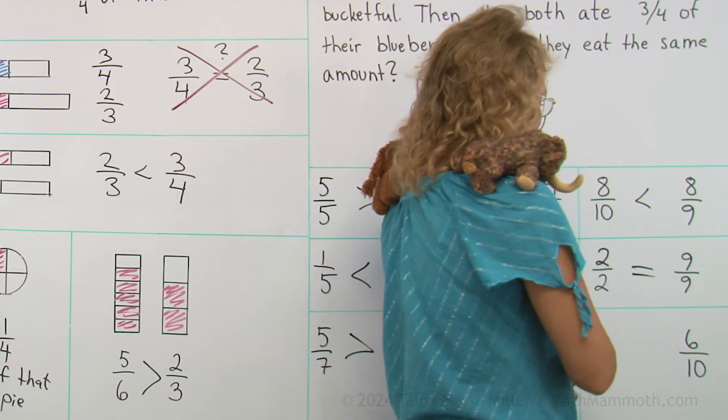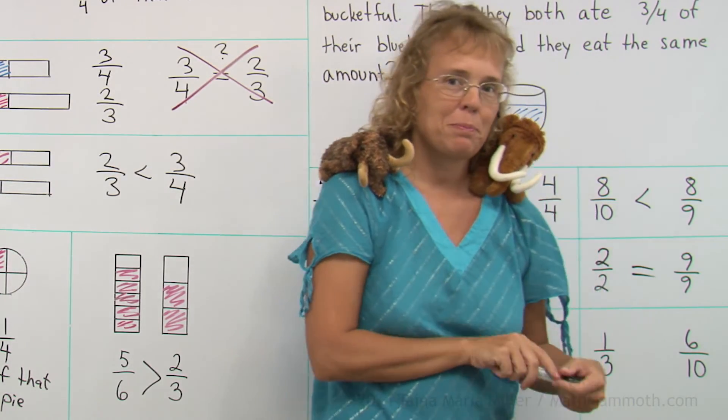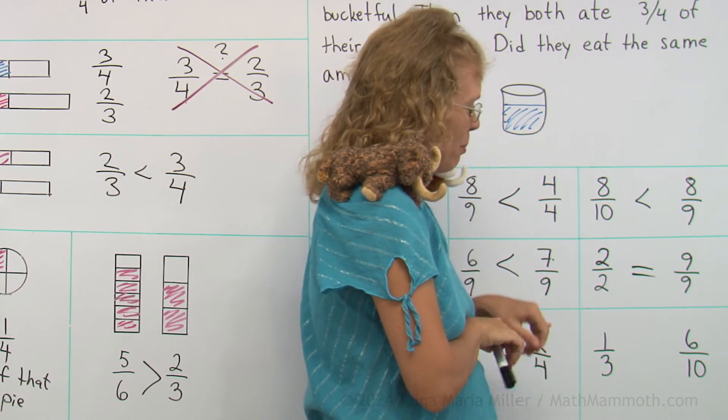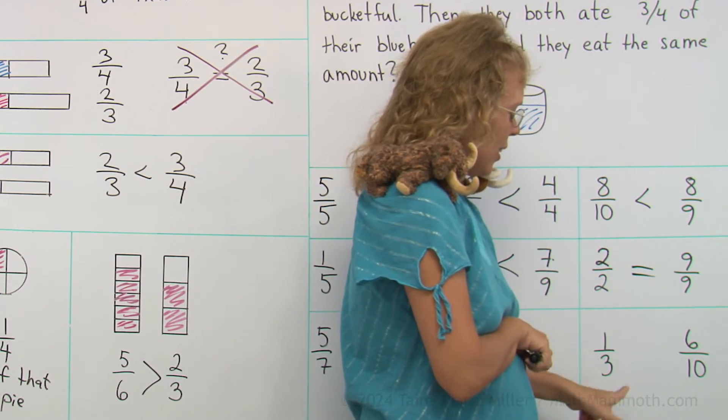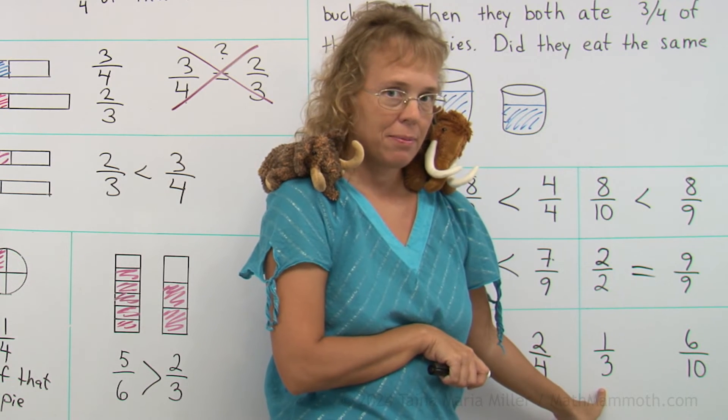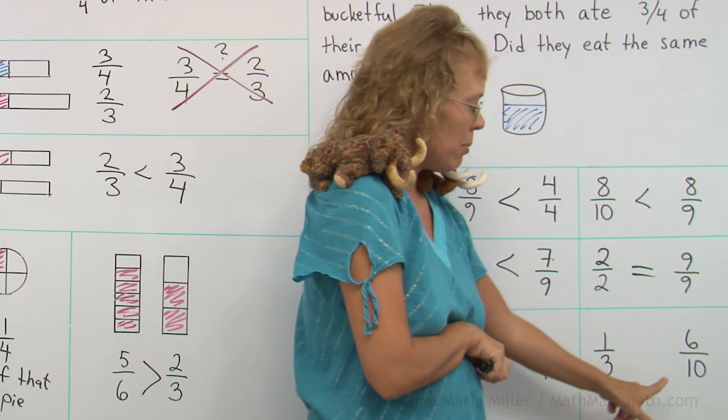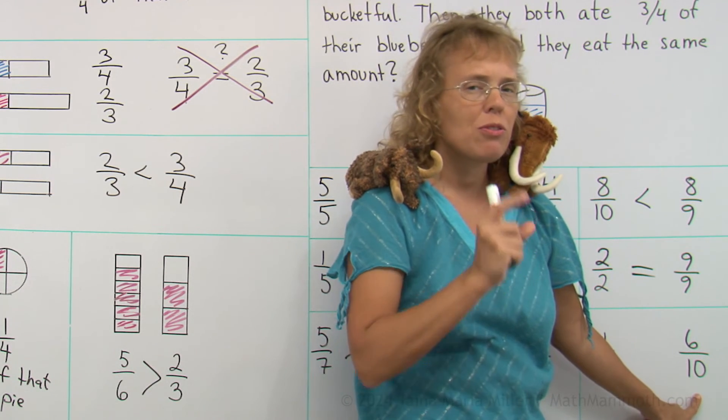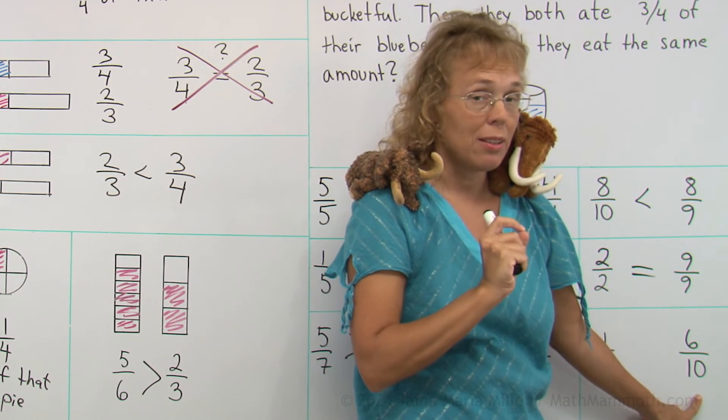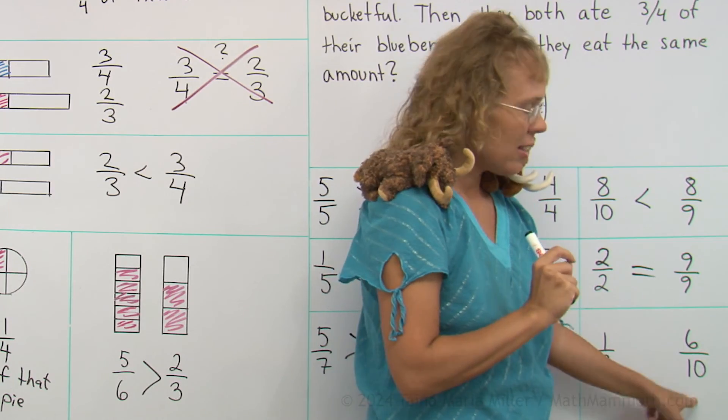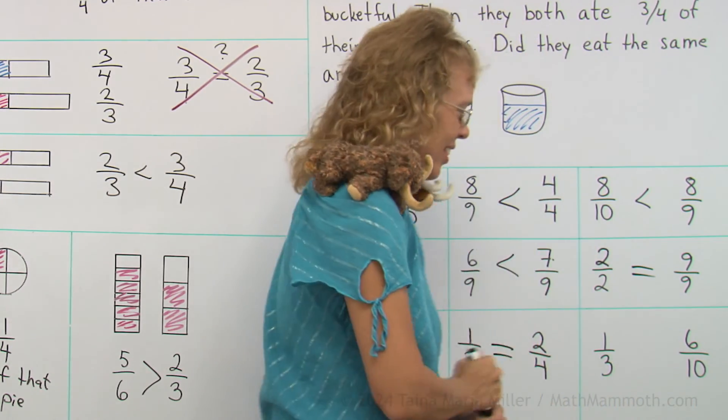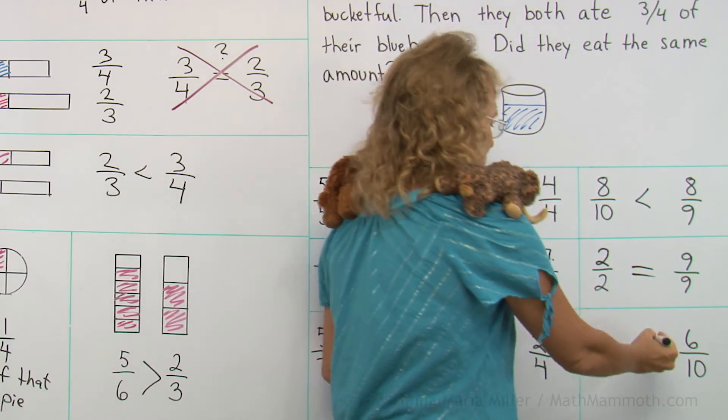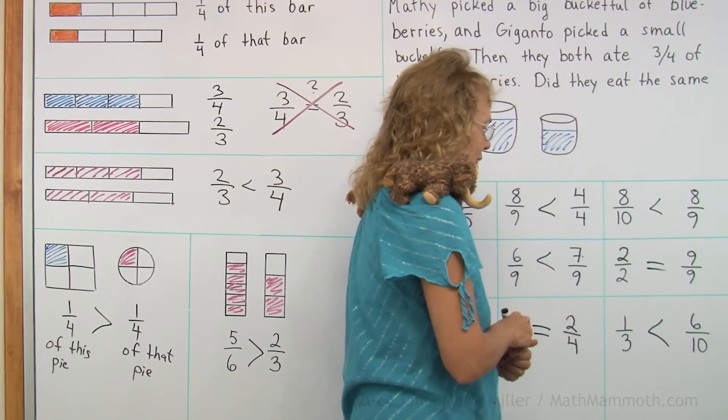And then lastly, one-third and six-tenths. It might be a little trickier. Think this way. Is this more than one-half? No, it's less. How about this one? Is this more than one-half? Yes, it is, because five-tenths would be one-half. So six-tenths is a little bit more than one-half, and this was less than one-half. So one-third is less than six-tenths.